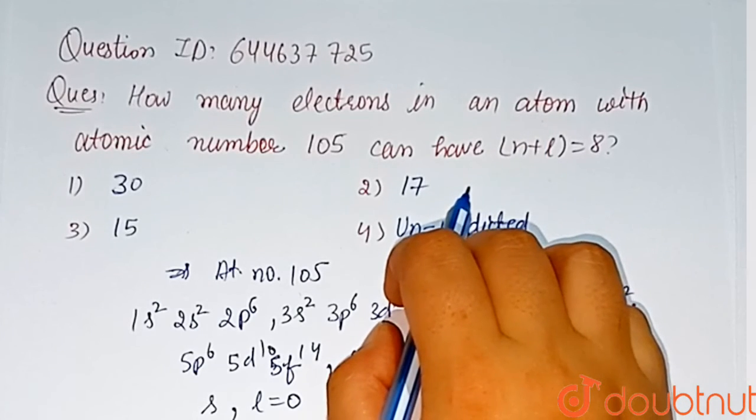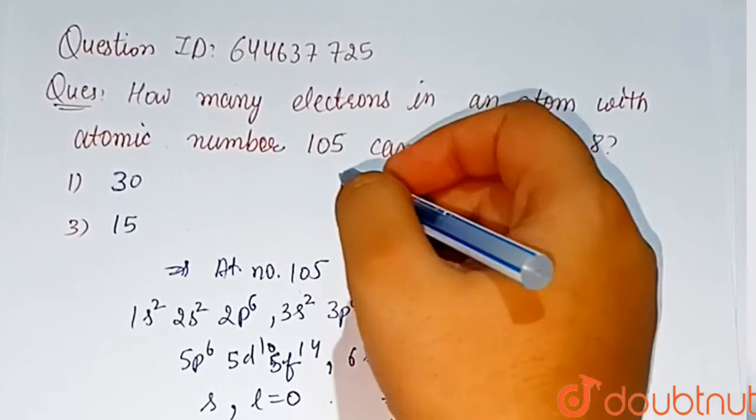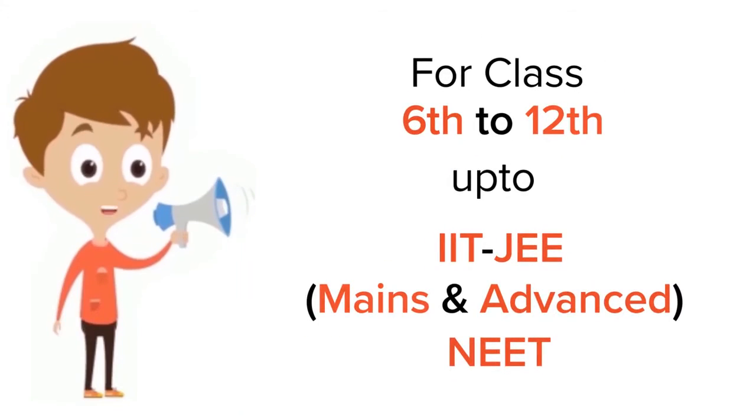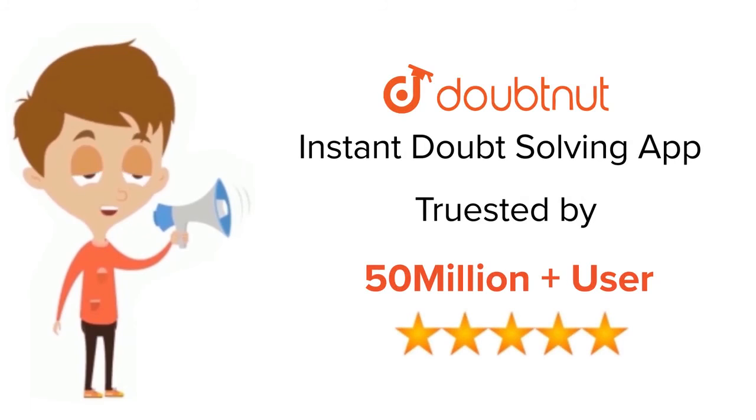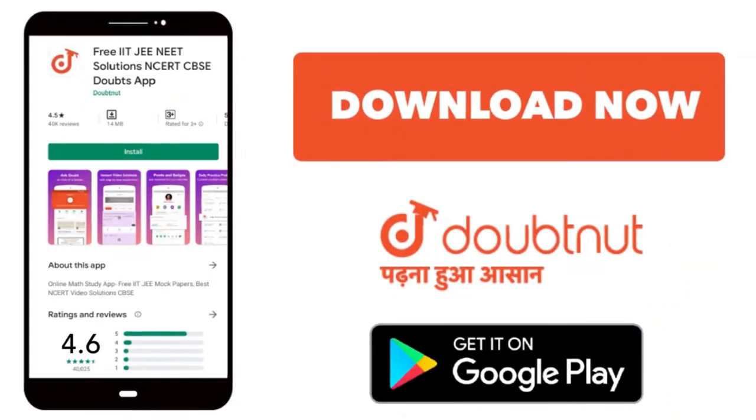So 17 electrons in an atom with atomic number 105 can have n plus l equal to 8. So option 2 is the correct answer. For class 6th to 12th, IIT-JEE and NEET level, trusted by more than 5 crore students. Download Doubtnet today.